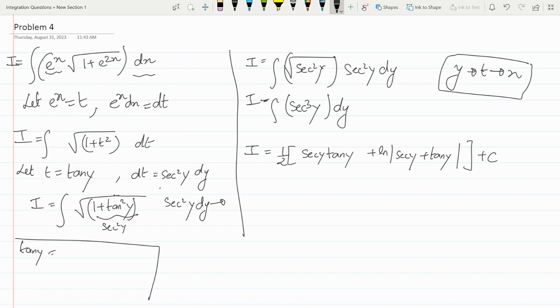Now as we know secant square y equals to 1 plus tan square y. So secant y in this case will be square root of 1 plus t square.